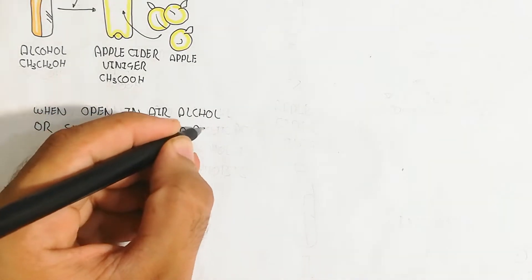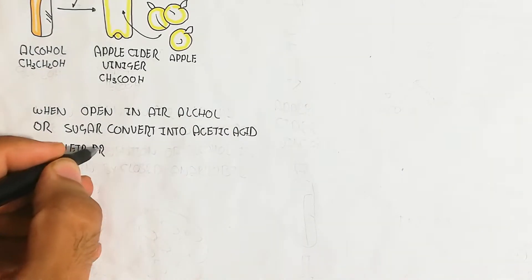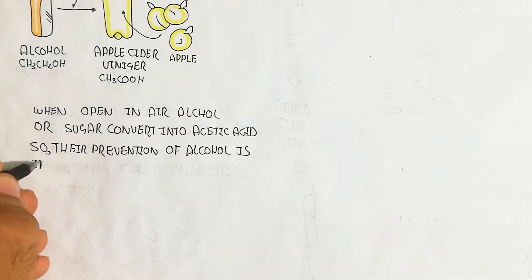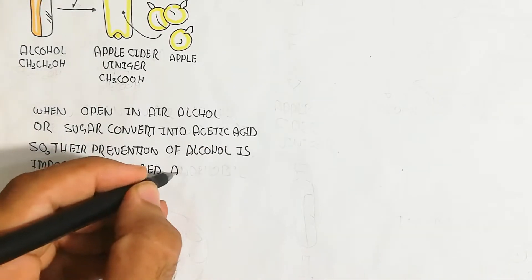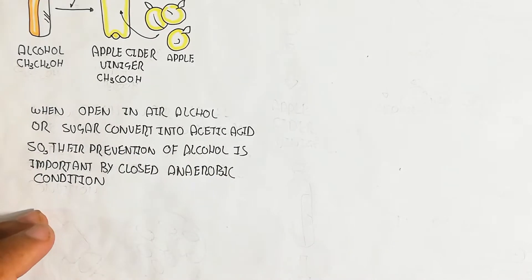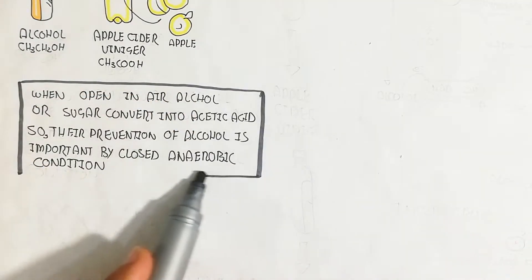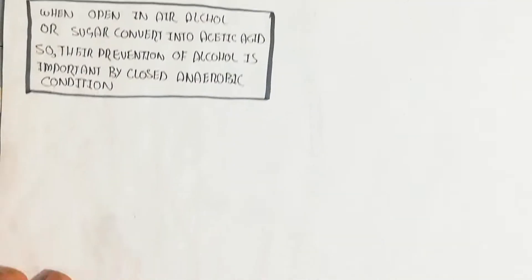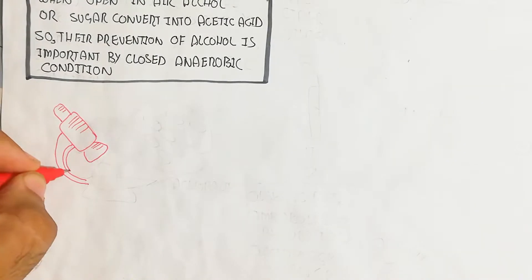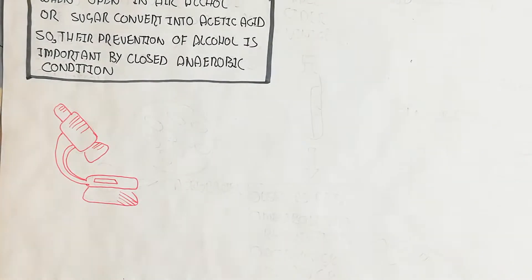To prevent alcohol from converting to acetic acid, it must be kept in closed, anaerobic conditions — that is why we remove air from alcohol bottles to preserve their properties. However, in industrial settings, acetobacter can be deliberately added for vinegar production and other food products.